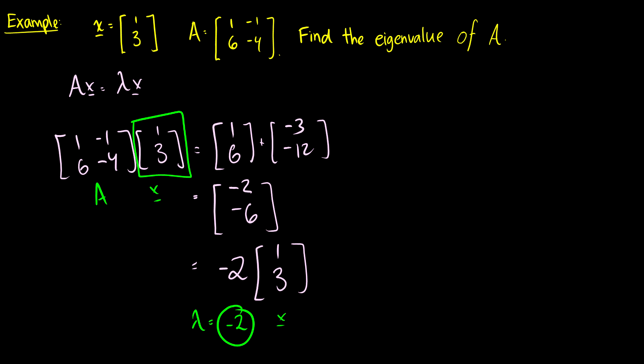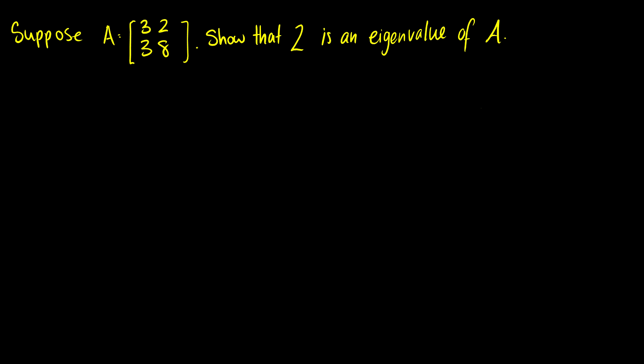A matrix can have different eigenvalues for different vectors, so there's not necessarily just one eigenvalue, and given a single vector you can't find all eigenvalues. For instance, I can ask you to show that 2 is an eigenvalue of a given matrix A. We write Ax equals 2x, and this has to have a non-trivial solution.